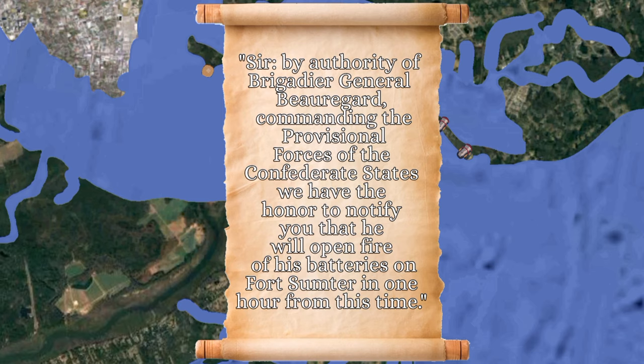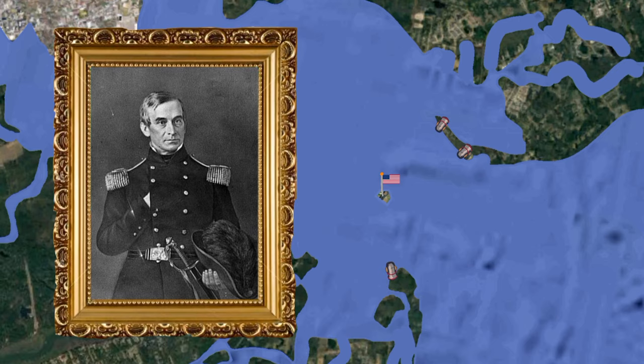Chesnut wrote a reply handed to Anderson at 3:20 a.m.: 'Sir, by authority of Brigadier General Beauregard commanding the provisional forces of the Confederate States, we have the honor to notify you that he will open fire of his batteries on Fort Sumter in one hour from this time.' Anderson escorted the officers back to their boat, shook hands with each one, and said, 'If we never meet in this world again, God grant that we may meet in the next.'